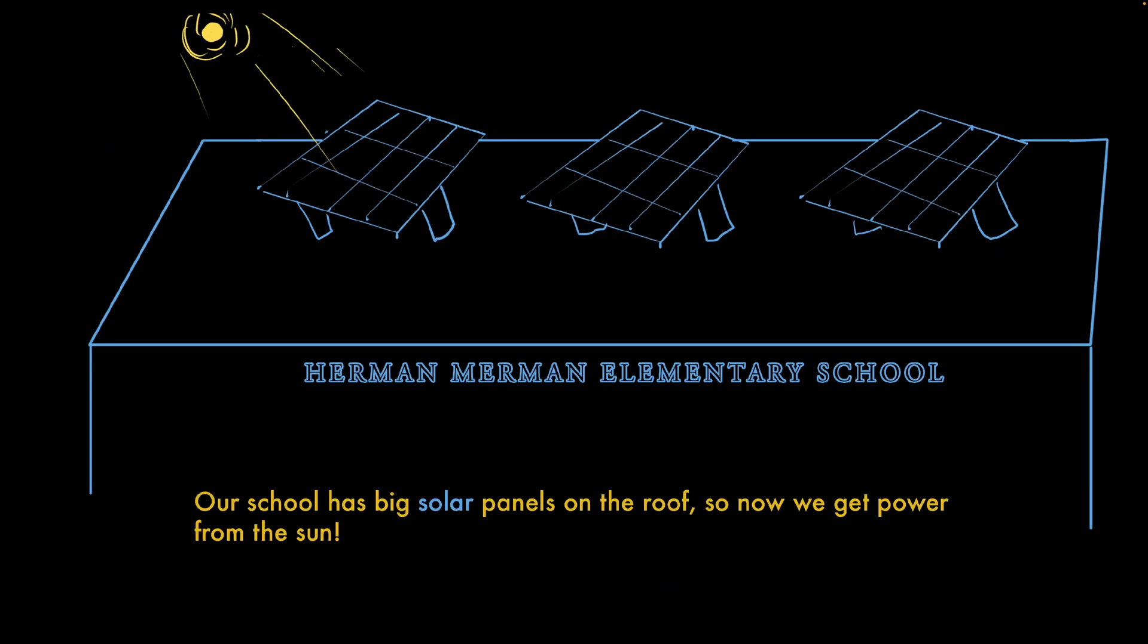Our school has big solar panels on the roof, so now we get power from the sun. Solar has to do with the sun. So what does a solar panel do? It gets energy or power from the sun. It turns sunlight into electricity that we can use to keep the lights and the air conditioning and all the computers running. Last one.